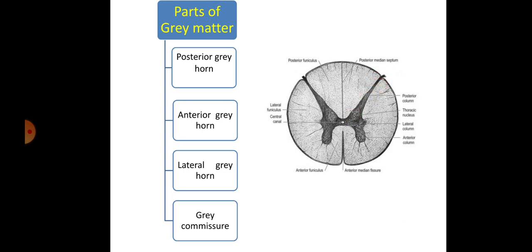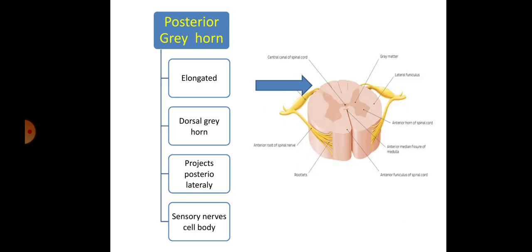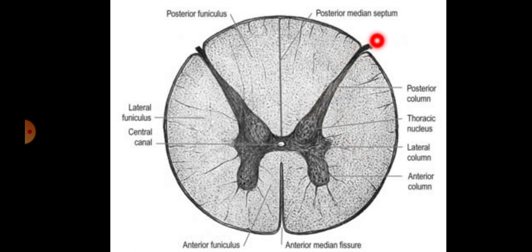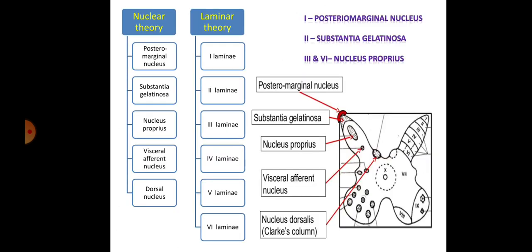The posterior grey horn is elongated and is also known as the dorsal grey horn. It projects posterolaterally and receives the sensory neuron — the first order sensory neuron terminates here and the second order sensory neuron starts here. It means it is a collection of the cell body of the second order neuron. The posterior grey horn is further divided into nuclei according to nuclear theory, and into laminae according to laminar theory.